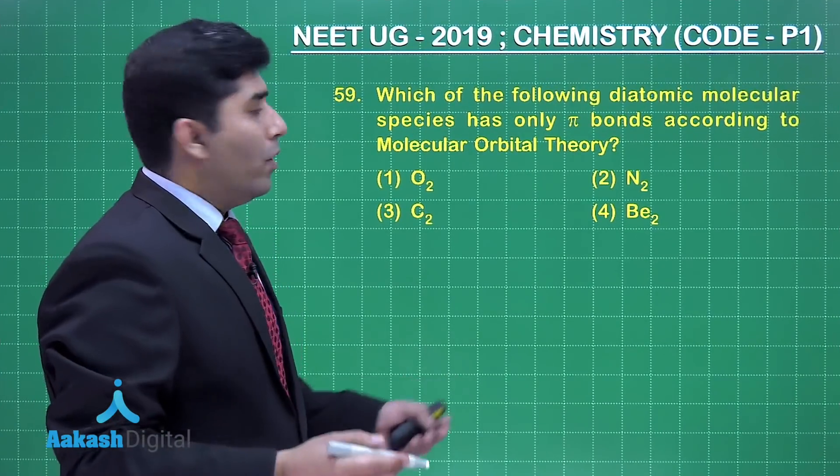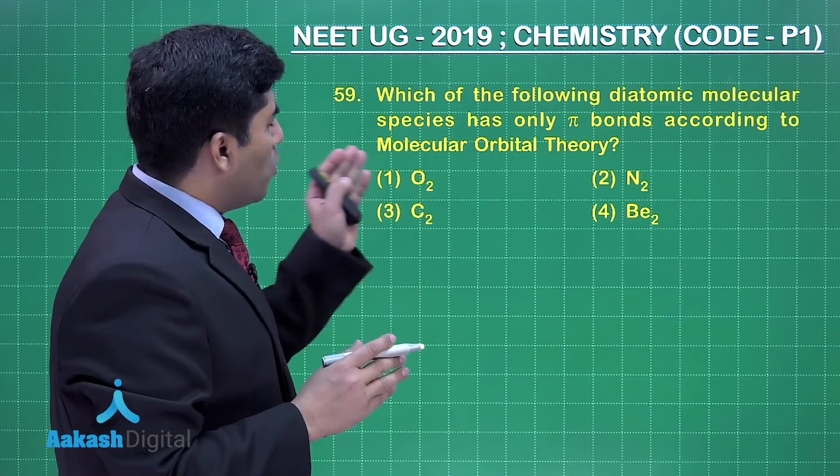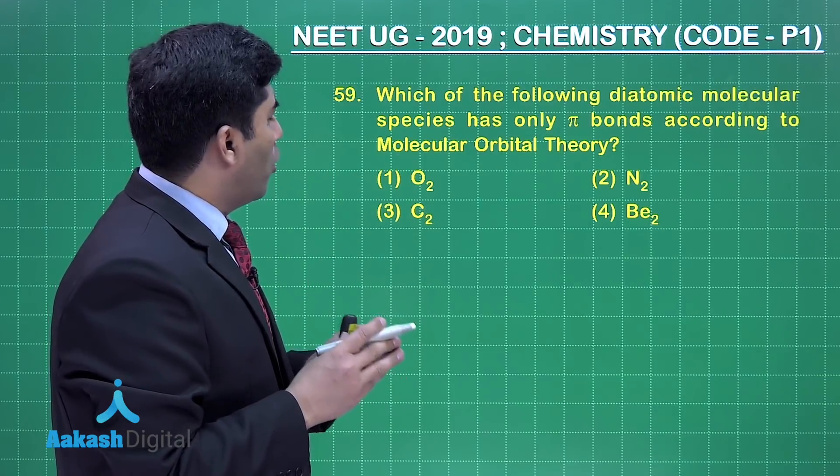This question asks which of the following diatomic molecular species has only pi bonds according to molecular orbital theory.